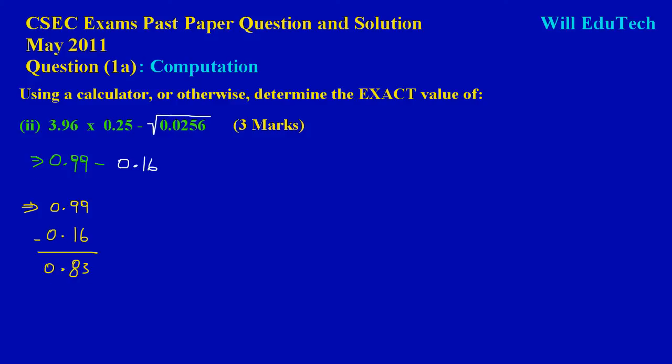So when this is calculated, 3.96 times 0.25 minus the root of 0.0256, our answer is 0.83. Thank you, bye-bye.